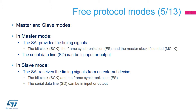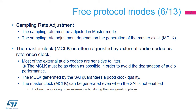In slave mode, the MCLK signal is not used. In slave mode, the SAI receives the frame synchronization signal, or FS, and the bit clock, or SCK, from another device, external or internal. The data line SD can be either input or output. In master mode, it is up to the SAI to generate the appropriate timings to provide the correct sampling rate. In slave mode, the sample rate is provided by the external audio device. Note that it is possible to generate a master clock to an external device even when the SAI is not enabled. This feature can, for example, provide a clock to an external codec during the configuration phase.